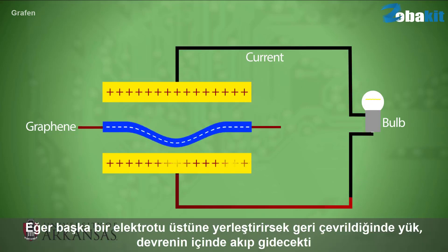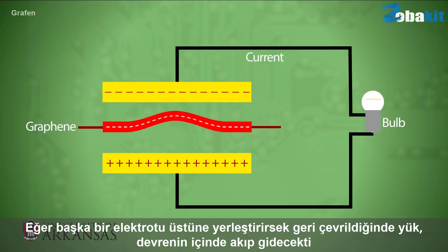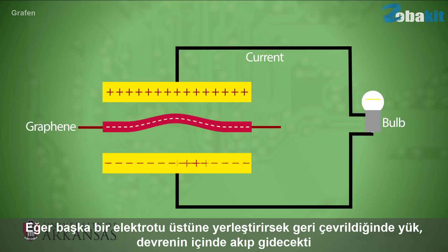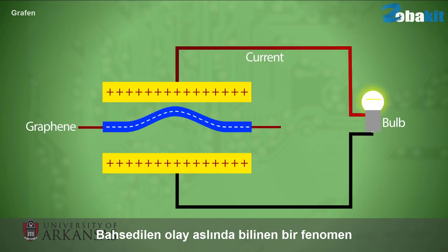If we had another electrode above it, when it flipped back, then the charge would flow — you can see — in a circuit up to this thing here.